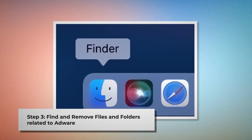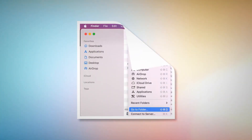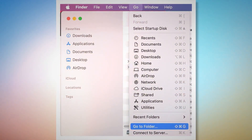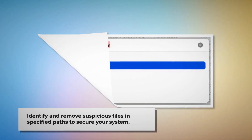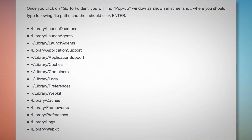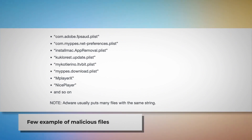Step three: Find and remove files and folders related to adware. Make sure you are in the Finder window, then click Go at the top menu bar and select Go to Folder from the drop-down menu. In the pop-up window, type file paths such as /Library/LaunchDaemons, /Library/LaunchAgents, /Library/Application Support, and so on. Look for suspicious or malicious files and move them to Trash. Note that adware usually puts many files with the same string.